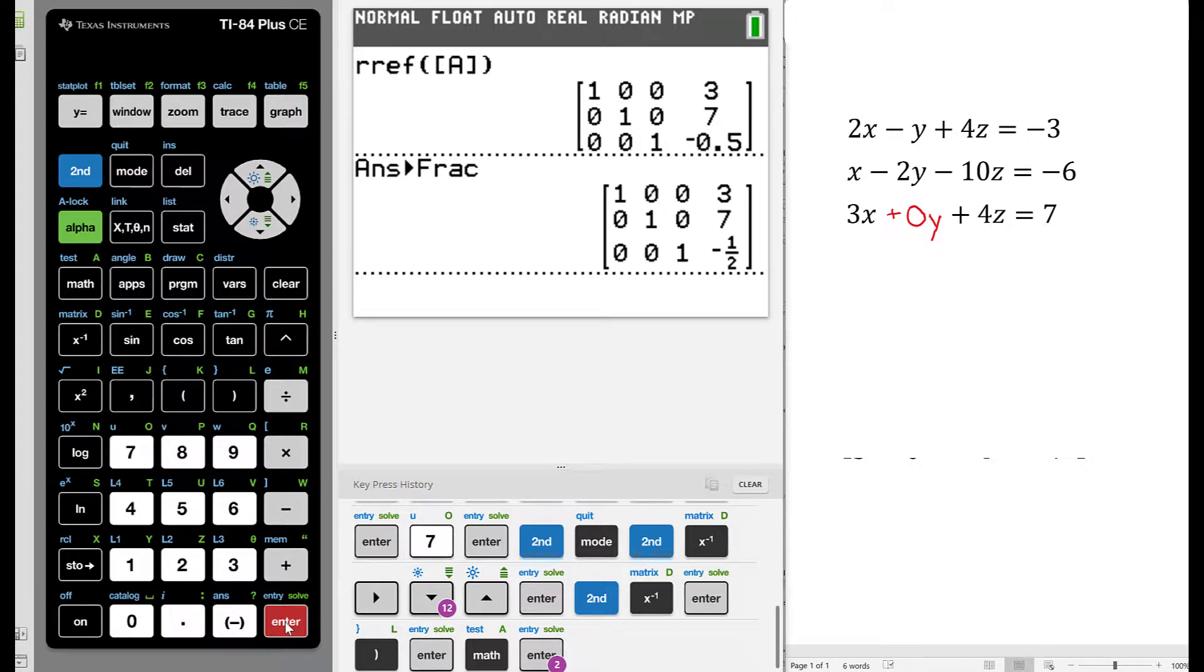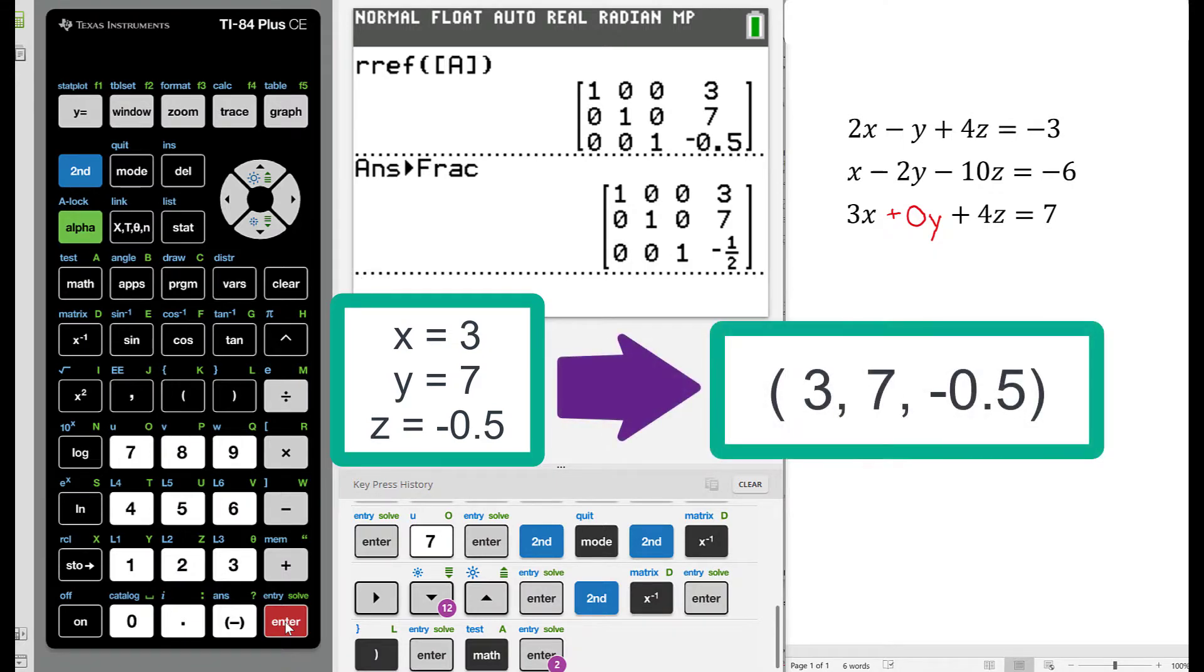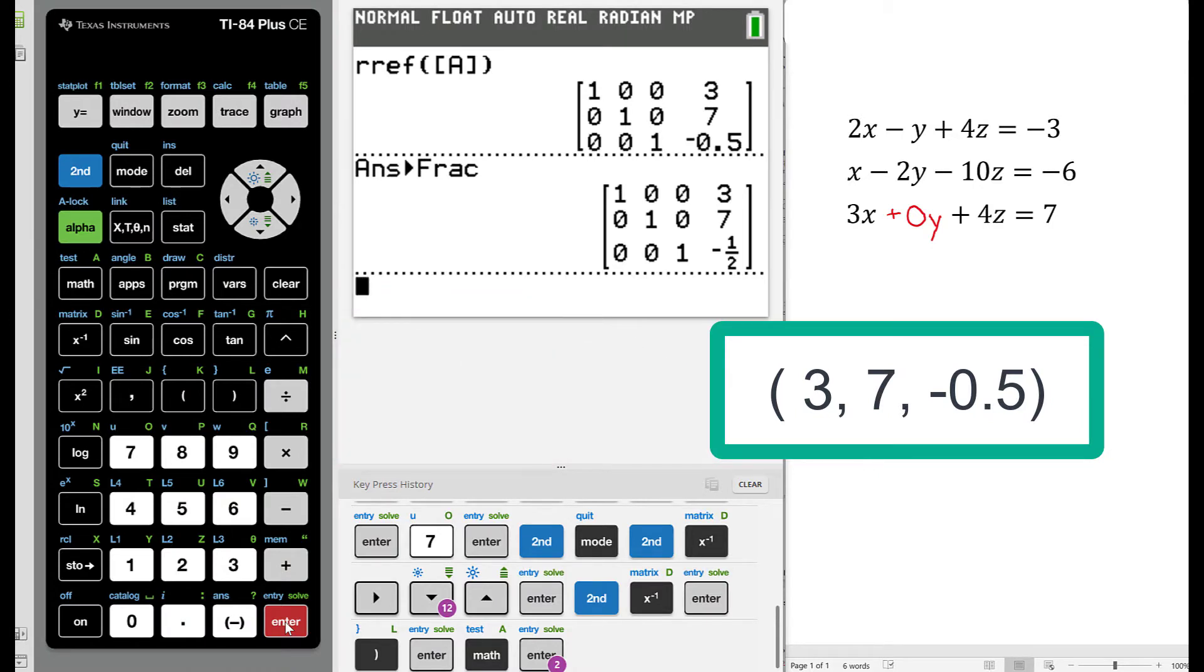You could use either one of these matrices to write down the solution. I will be using the matrix that has the decimal number in the solution. So the solution for this system of linear equations in three variables would be x equals 3, y equals 7, z equals negative 0.5. We would want to write this as an ordered triple, so we would write this as (3, 7, negative 0.5), and that would represent the solution of our system.